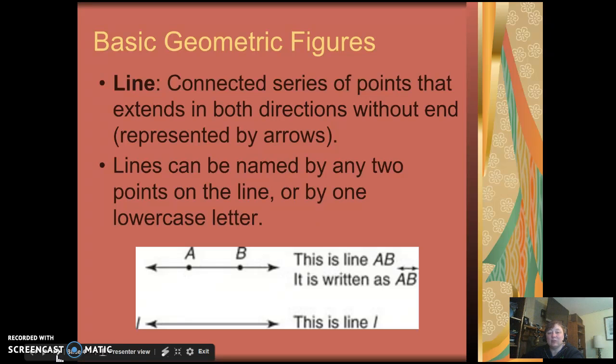Lines can be named in two different ways. They can be named using two capital letters, which are two points on the line, such as A, B. Or they can be named by a lowercase letter that would represent the whole line, such as the one below, line L.